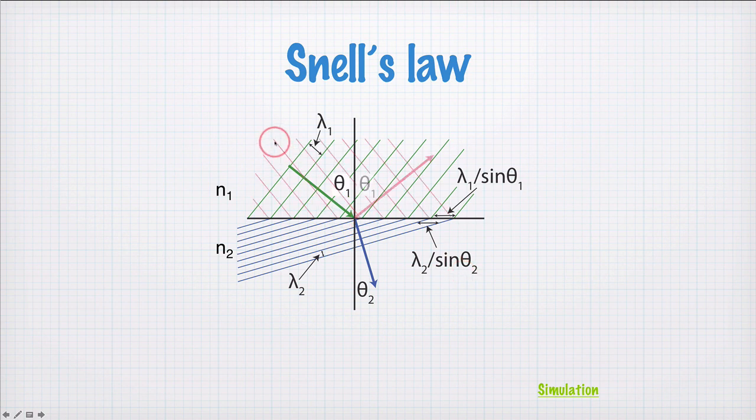There's one other process going on when light comes down onto this interface. Some light is transmitted and changes direction. Some light is also reflected. Light comes in at angle theta 1 and we also have reflection of light at angle theta 1—angle of incidence equals angle of reflection. When you have light hitting an interface between two different dielectrics with different refractive index, you have transmission and refraction and some reflection.